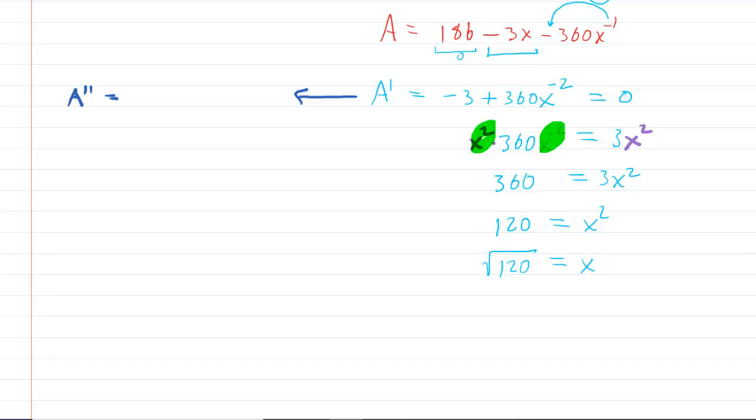And then the derivative of this term, which is follow the power rule again, multiply the negative 2 by 360 and you get negative 720 X raised to the negative 3rd. And what you would do is probably rewrite that as negative 720 over X cubed.